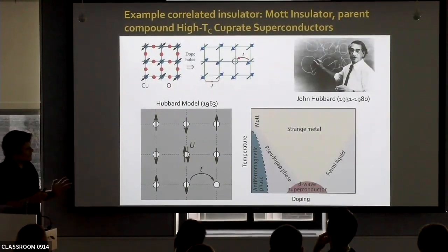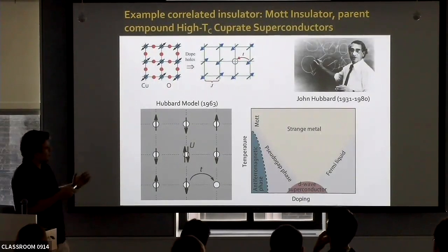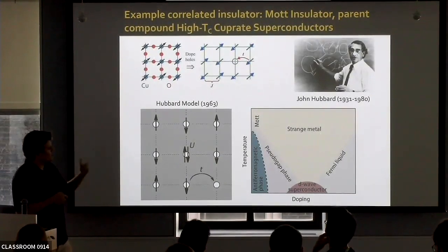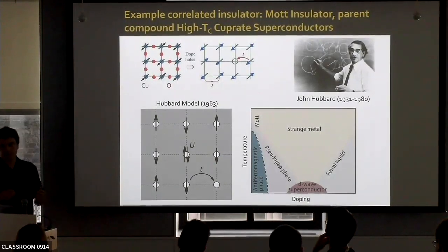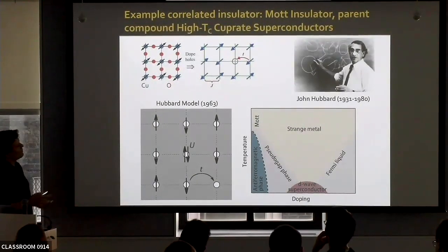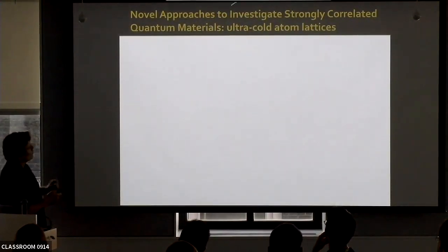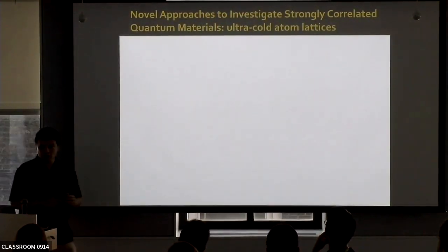The fact that it has taken many decades and still theoretically it's very hard to solve this problem even in the simplest implementation has led people to try very different approaches to study correlated physics. One of them — perhaps one of the most fascinating — is using ultracold atoms in optical lattices to investigate strongly correlated physics.